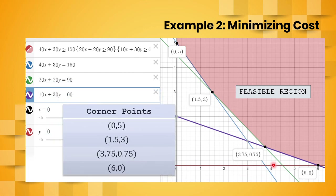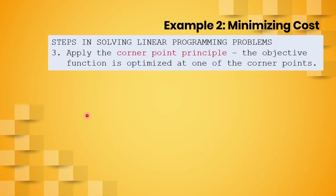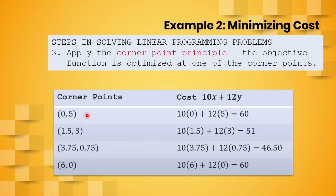After enumerating the corner points, we apply the corner point principle, which states that the objective function is optimized at one of the corner points. In our LP model we want to minimize the cost, which is 10x + 12y. Substituting each corner point, we find that among all corner points, the point (3.75, 0.75) minimizes the total cost.